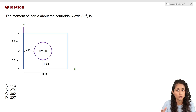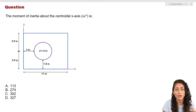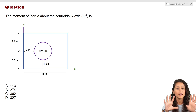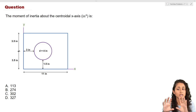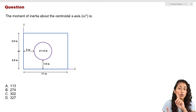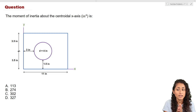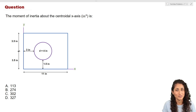I'll leave the link above in case you want to check it out. Once you apply the parallel axis theorem, you'll also need to use the tables in the reference manual to grab the equations for the rectangle and the circle. Keep in mind that the circle is inside the rectangle, so don't forget to subtract them. Give this problem a try and I'll see you in a little bit.